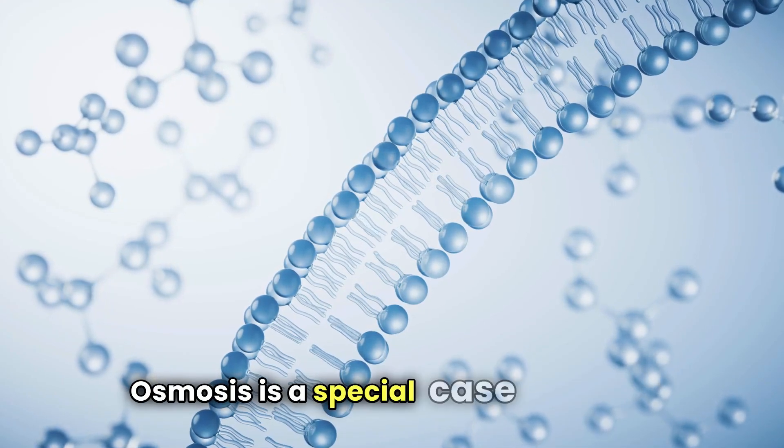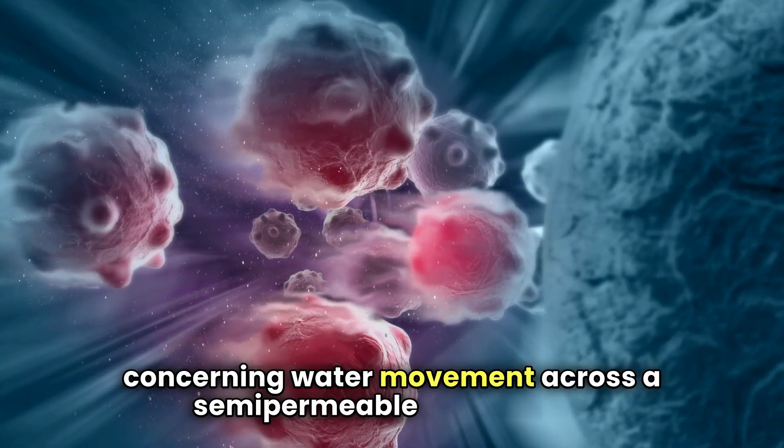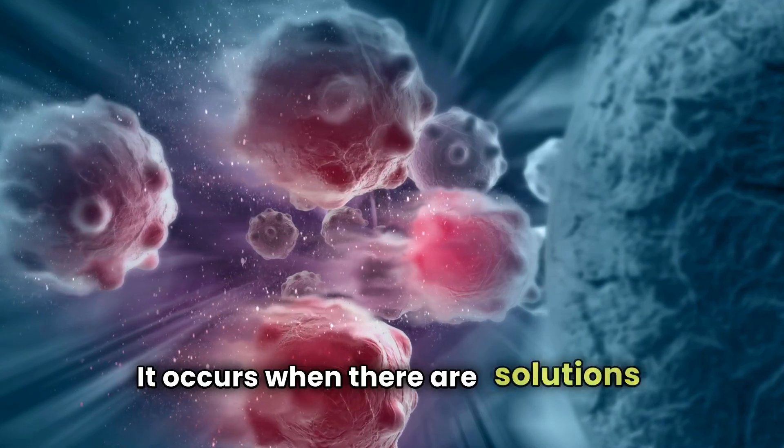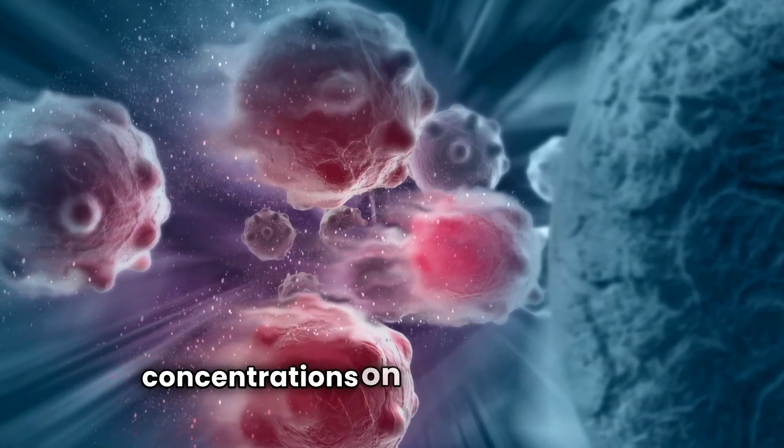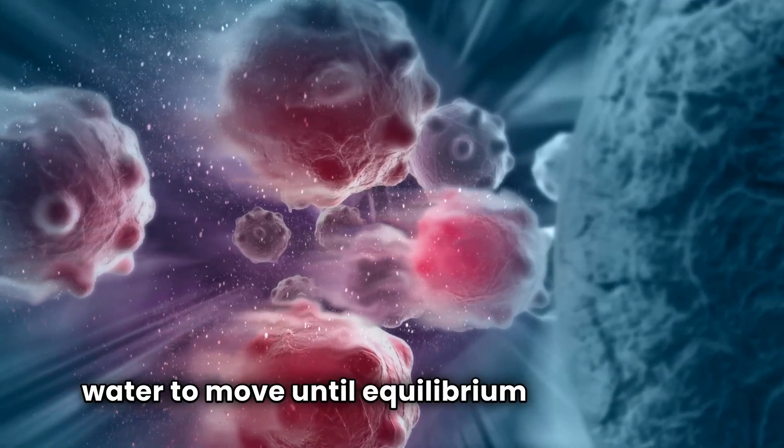Osmosis is a special case of diffusion concerning water movement across a semi-permeable membrane. It occurs when there are solutions of differing concentrations on either side of the membrane, allowing water to move until equilibrium is achieved.